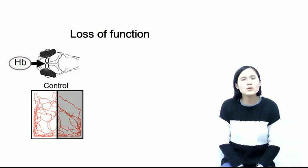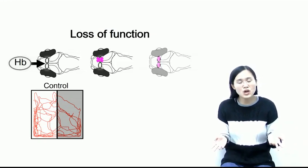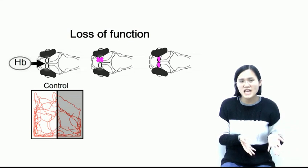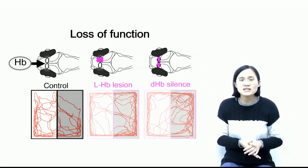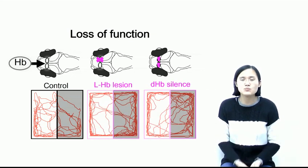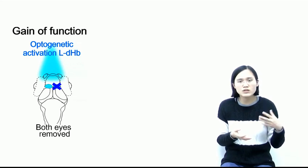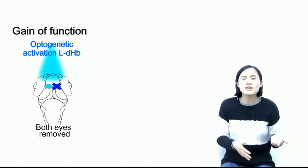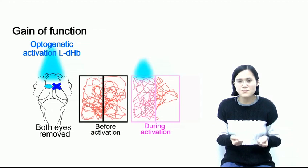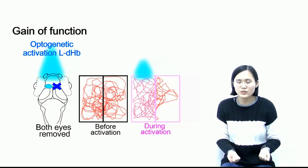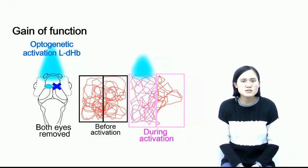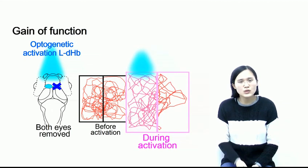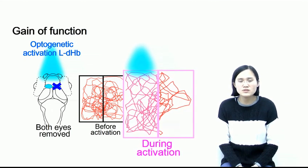Interestingly, when we did lesion or dysfunction of the left dorsal habenula, it severely impaired retinal input-dependent light-preference behavior. While on the contrary, optogenetic activation of the left dorsal habenula neurons recaptured the preference in both eyes-removed larvae. This result suggested that the left dorsal habenula is crucial for the light-preference behavior.